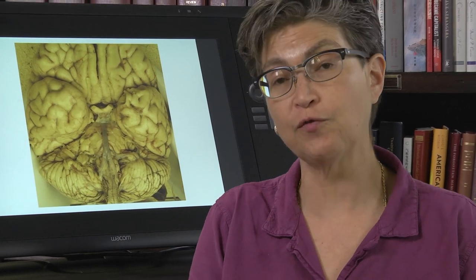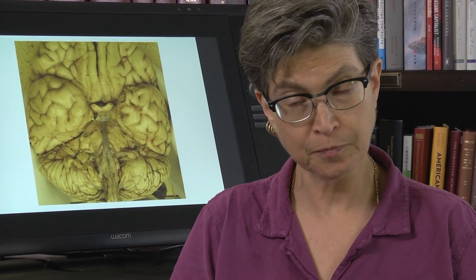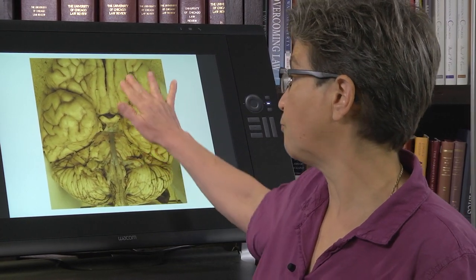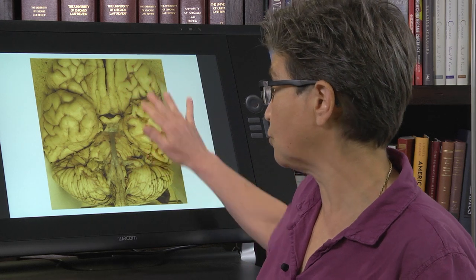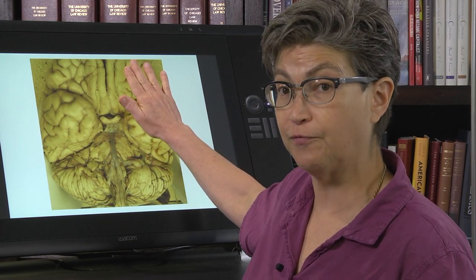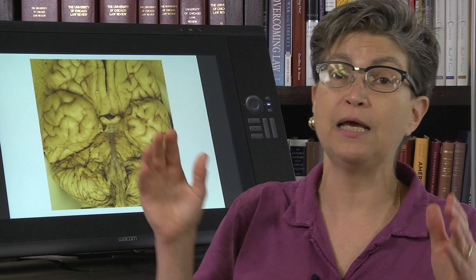So an uncal herniation is going to press on cranial nerve 3. How are you going to know that cranial nerve 3 is a problem? You're not going to ask the person can you read, do you have a near triad.